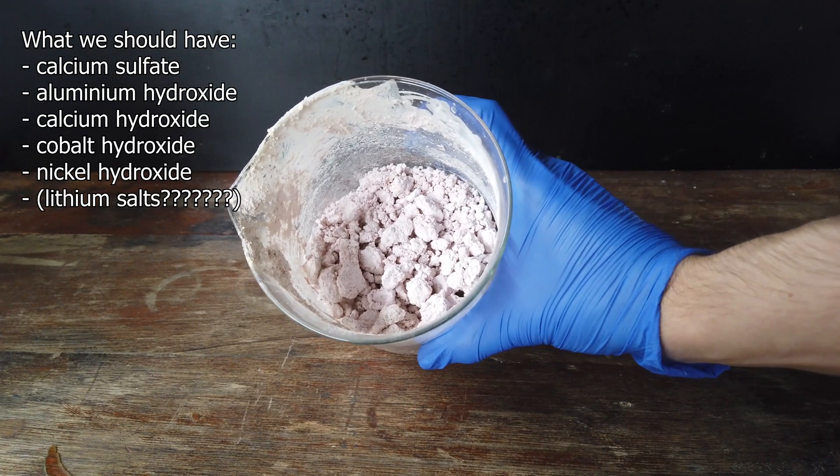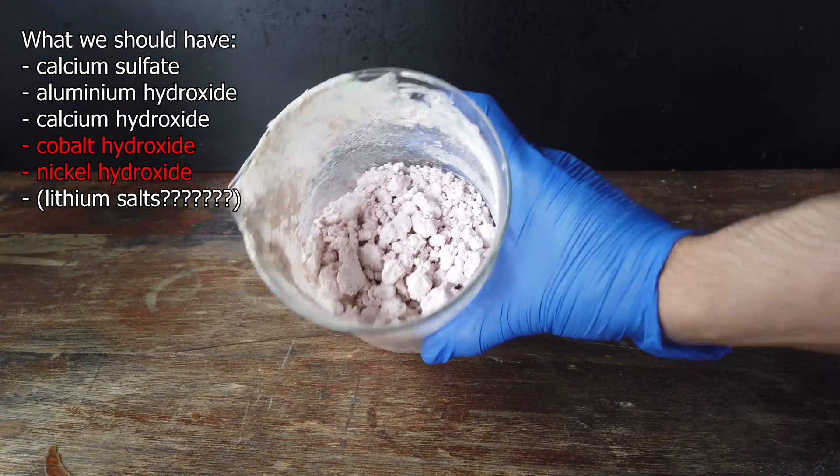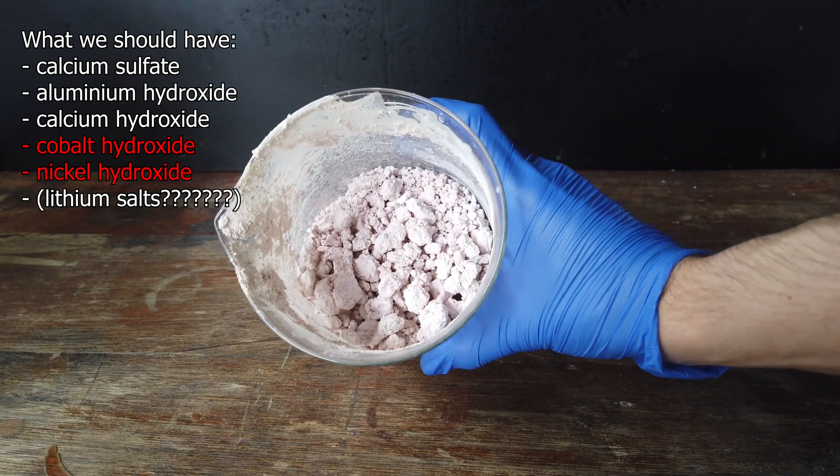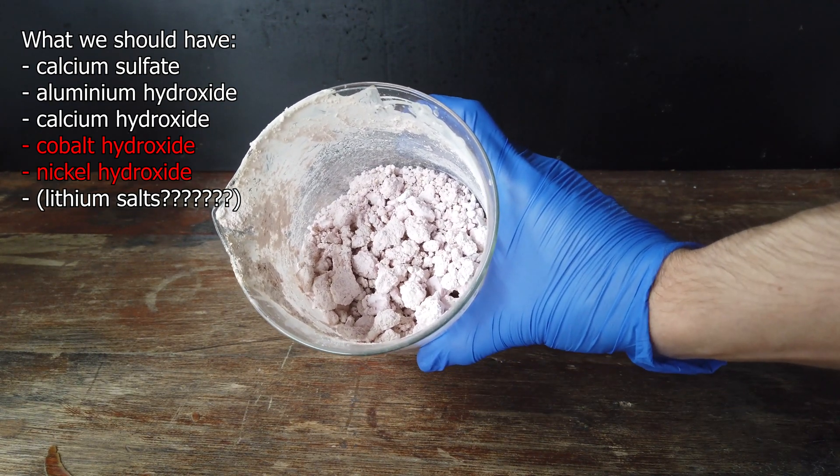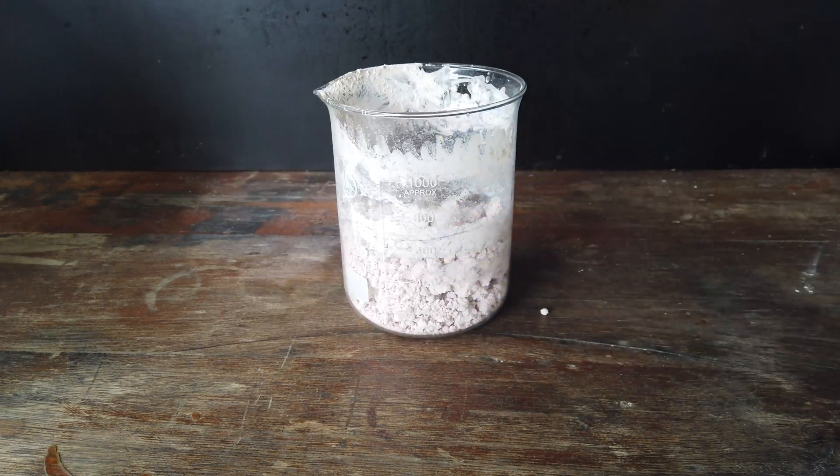So, the plan from here on is to extract the cobalt and nickel, and then eventually separate the cobalt and the nickel from each other, which isn't the easiest thing to do, but we are going to have a go. I think I've got a pretty good method of doing it.